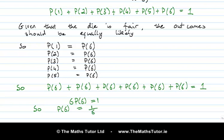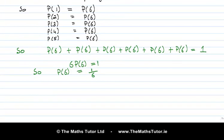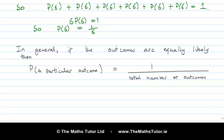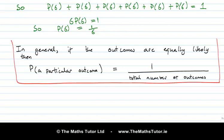We've actually calculated the probability we were looking for, and the only assumption we used was that the outcomes were equally likely. In general, if the outcomes of a trial or experiment are all equally likely, then the probability of any particular outcome is 1 divided by the total number of outcomes. There are 6 outcomes on a die, so the probability of any one of them is 1 over 6.